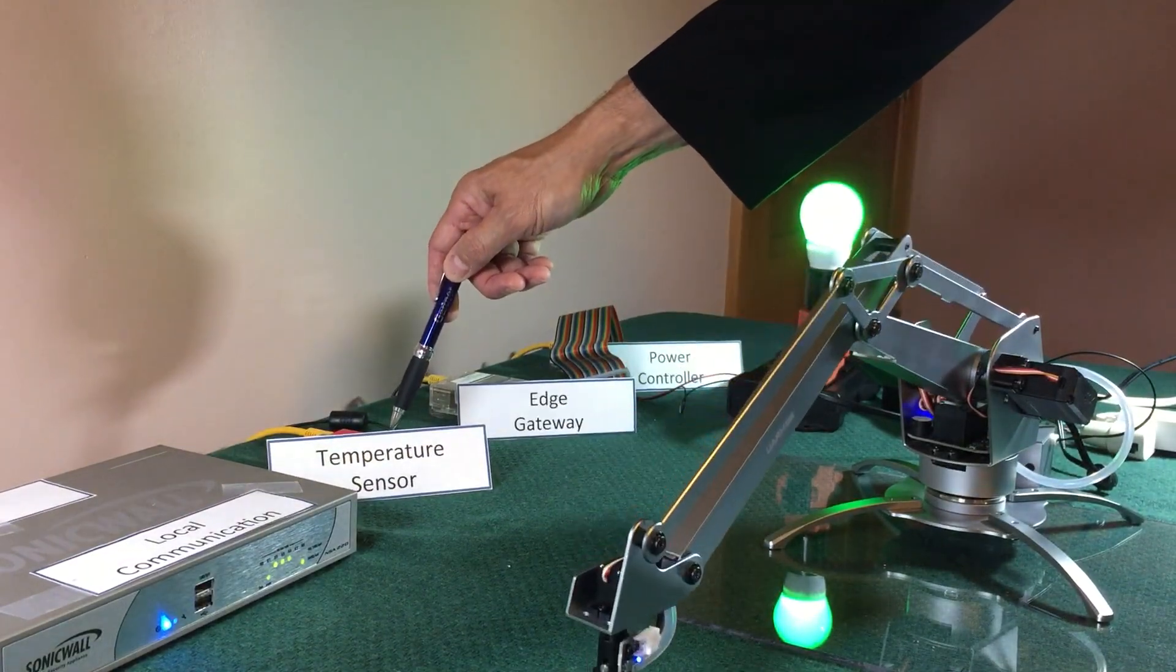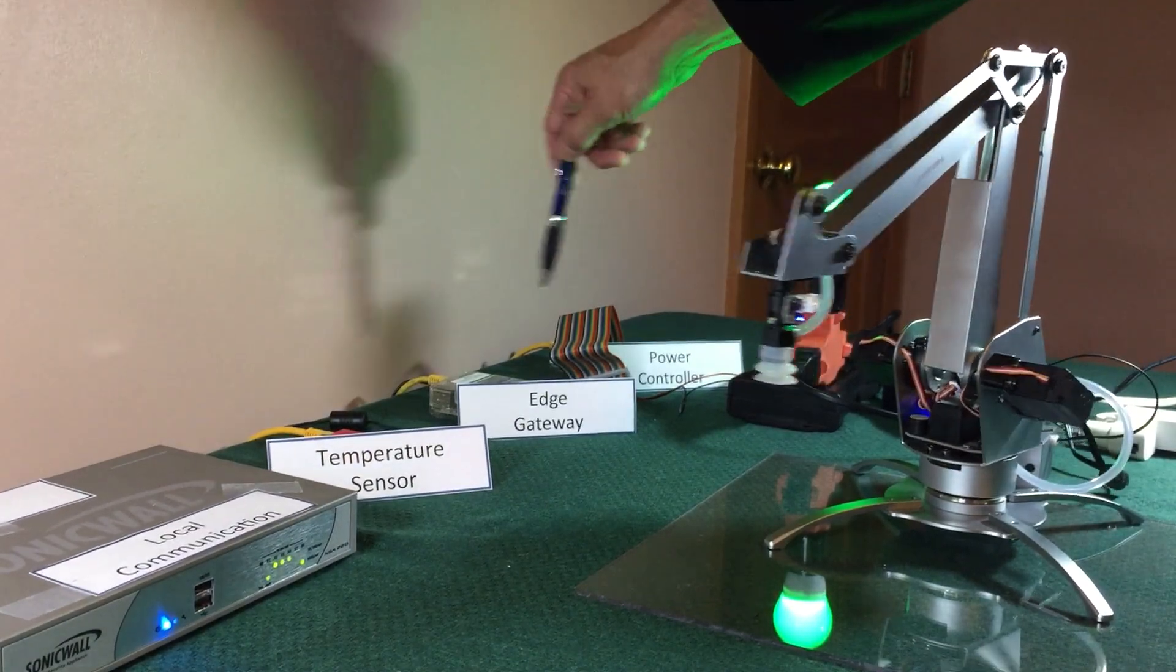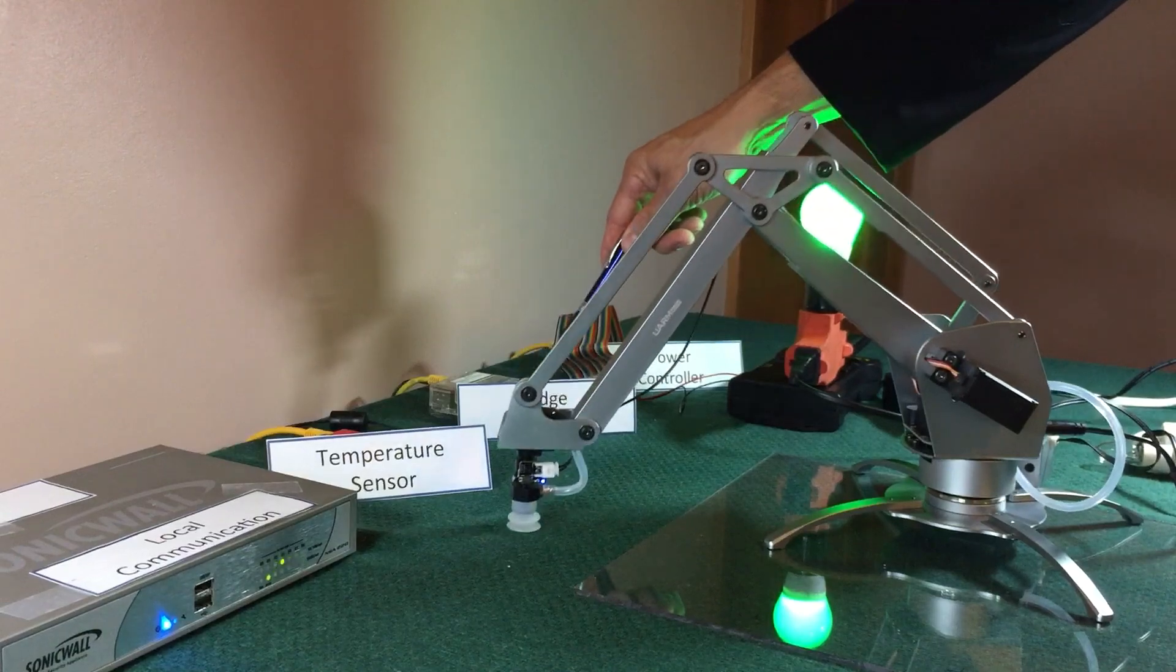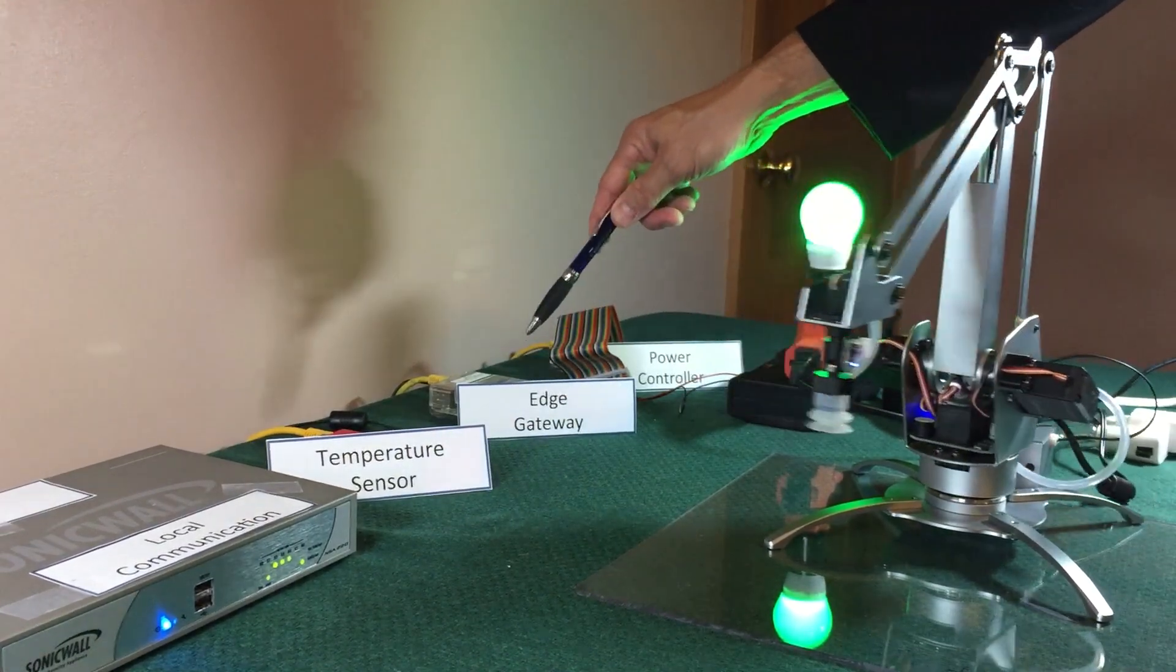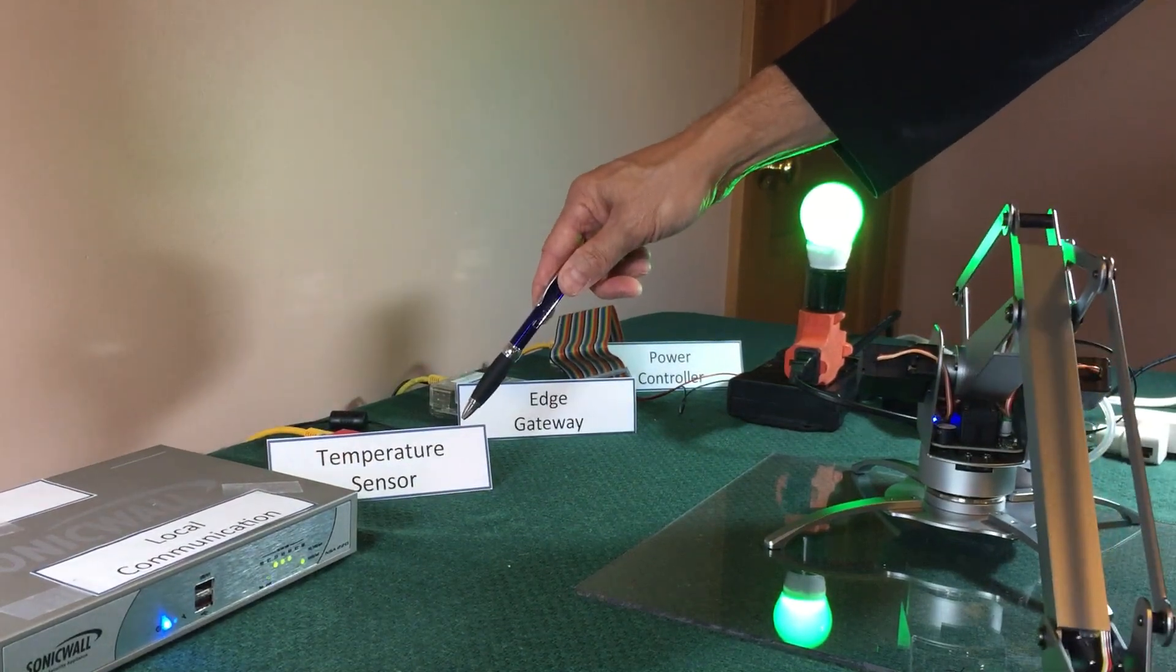The edge gateway is another Raspberry Pi running the AWS Greengrass core. It's basically doing forwarding between the sensor, which is a publisher, and the power controller, which is a subscriber. We're using MQTT.